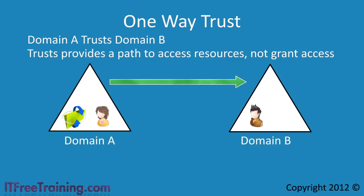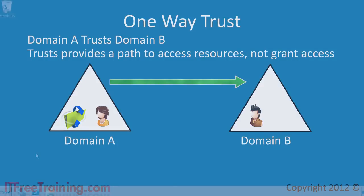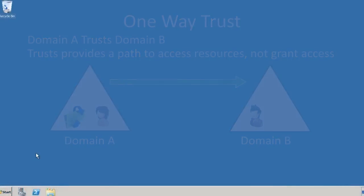If a user Jane is in domain A, she would not be able to access resources in domain B. In order for this to occur, domain B needs to trust domain A. If you get confused, draw an arrow between the two domains with the direction of the trust. In order for the user to access the other domain, the arrow must point towards the user. Now that we understand how trusts work, I will change to my Windows server to demonstrate how to create trusts.